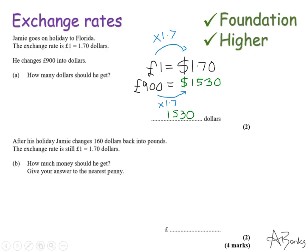The second part of this question says after his holiday Jamie changes $160 back into pounds. The exchange rate is still £1 is $1.70. How much money should he get? Give your answer to the nearest penny. So again I'm going to write out my exchange rate. So £1 is $1.70.